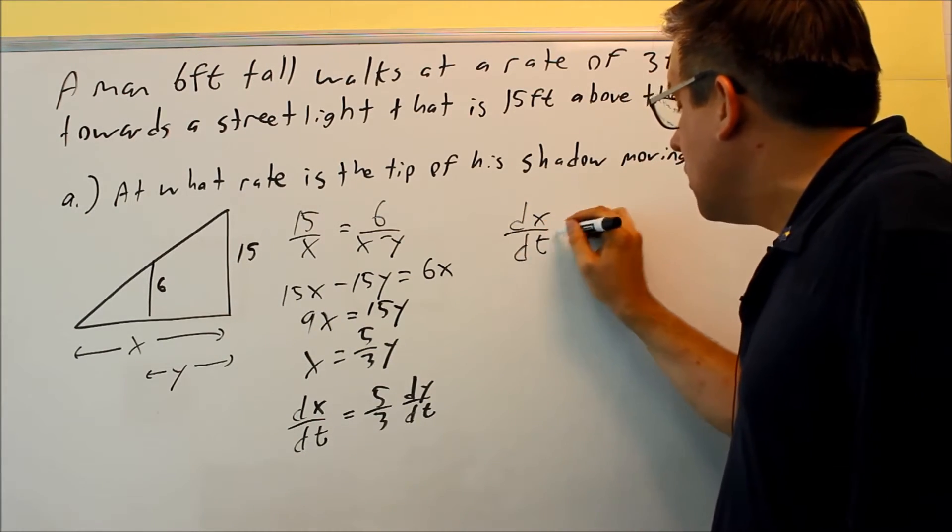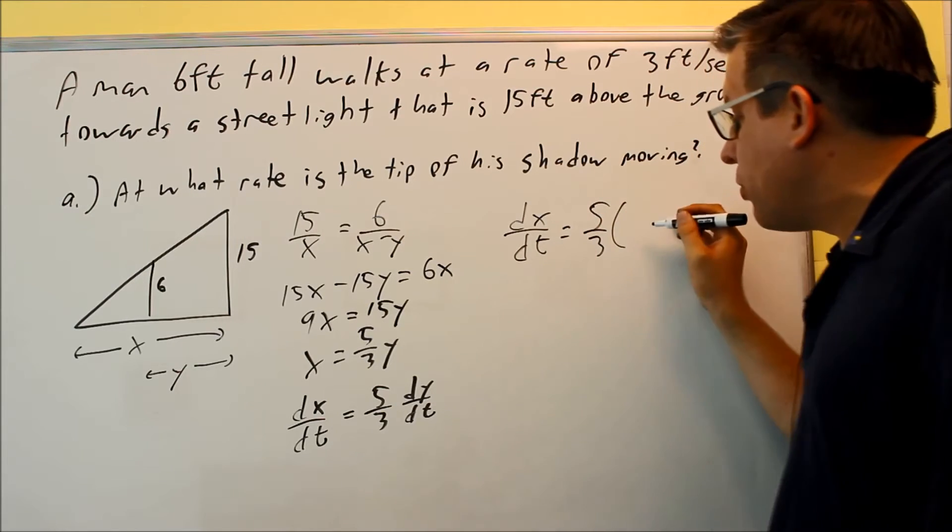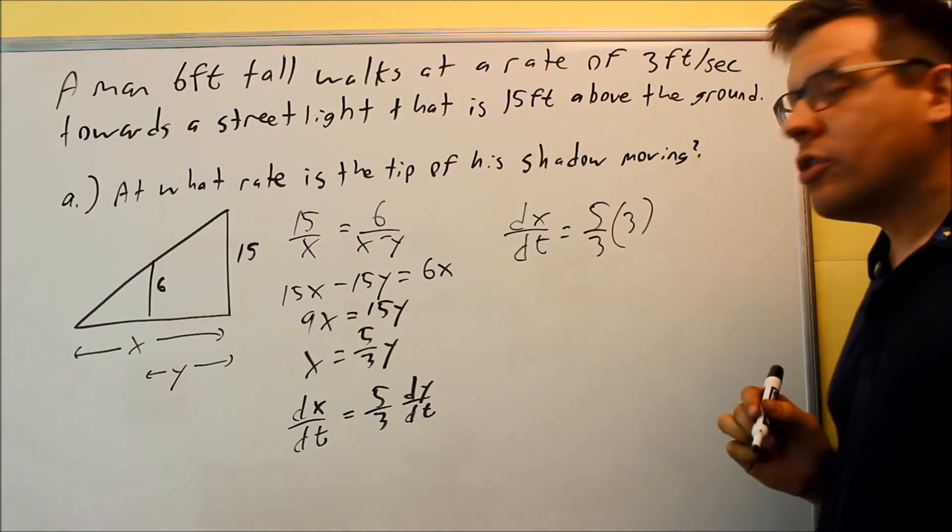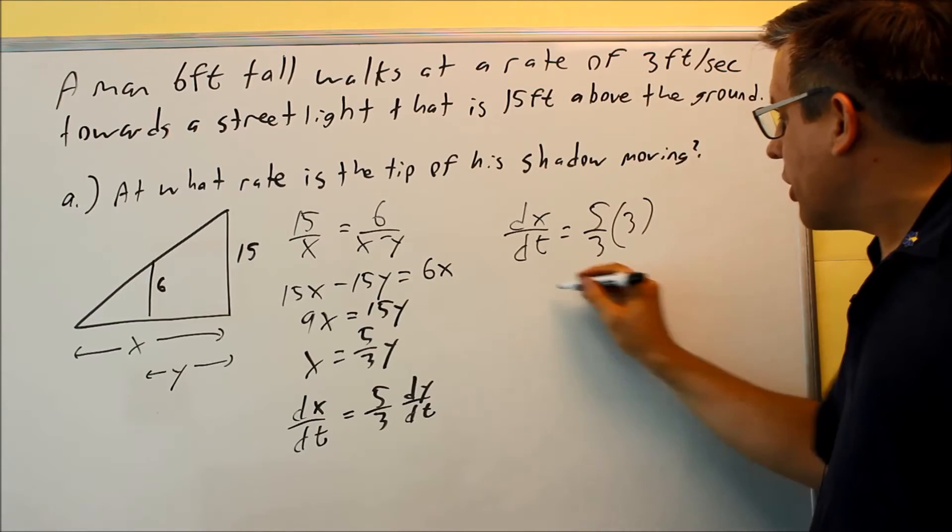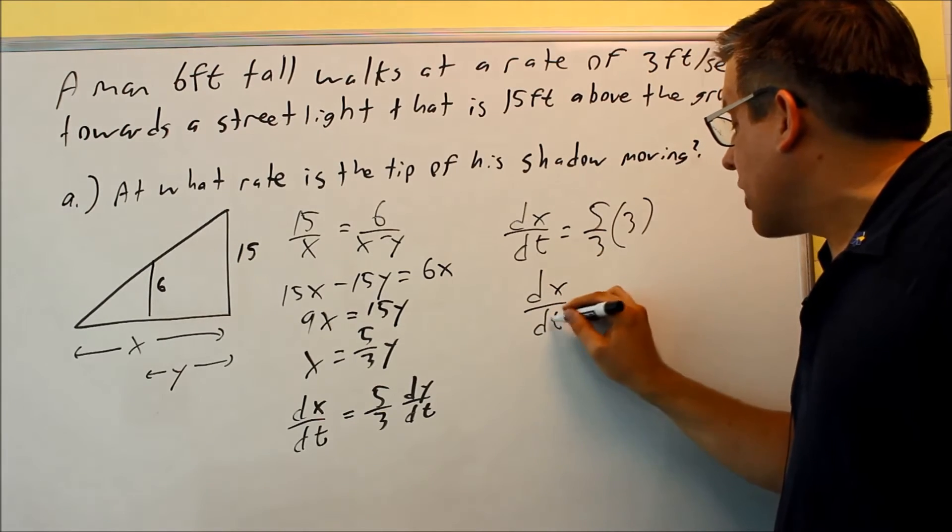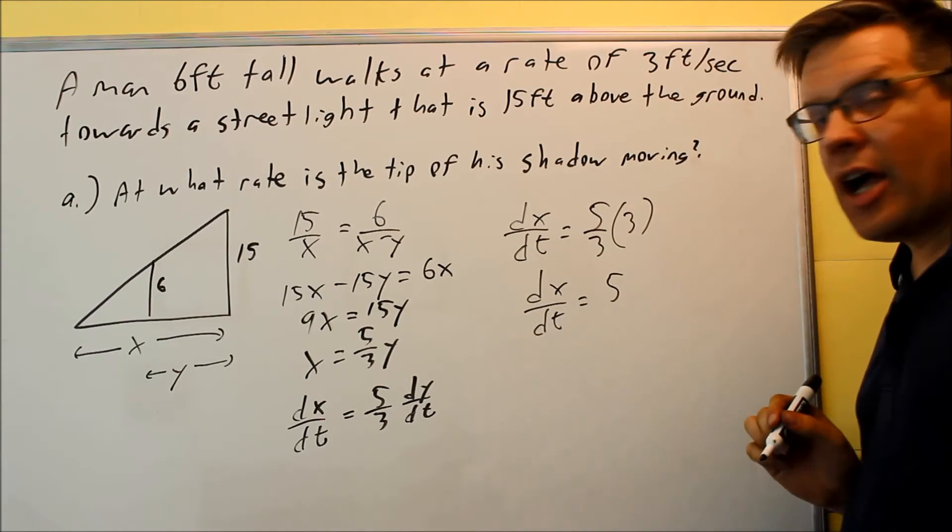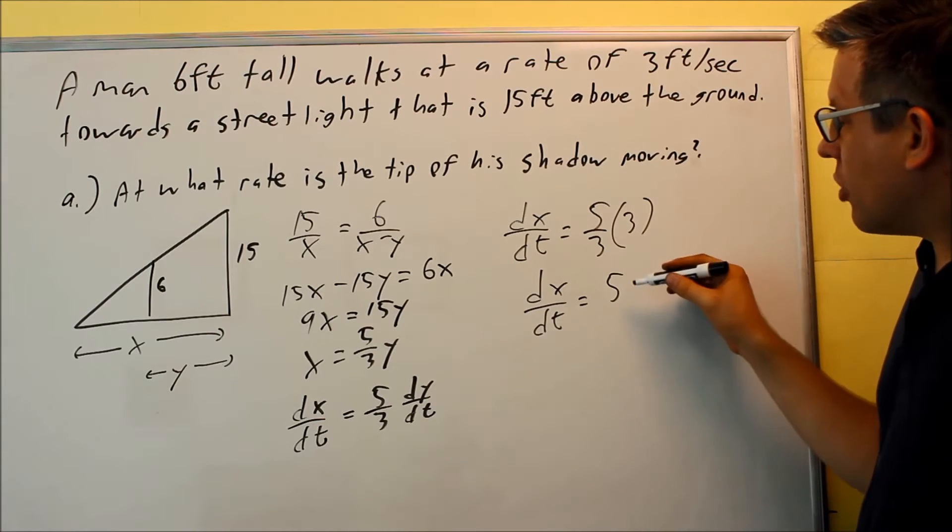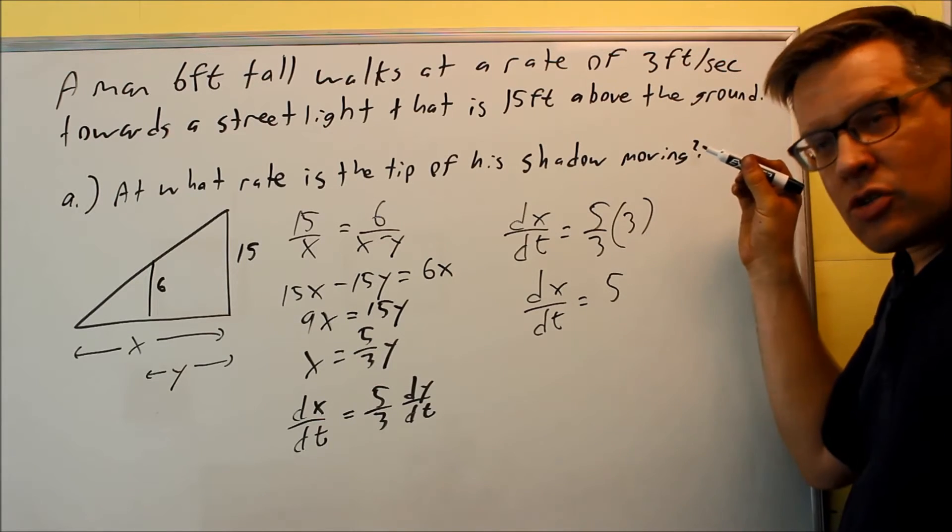So dx dt is going to be 5 thirds, and then you put in a 3 for dy dt. The 3's are going to cancel out, and your dx dt is going to be equal to 5. That's going to be in terms of feet per second as well.